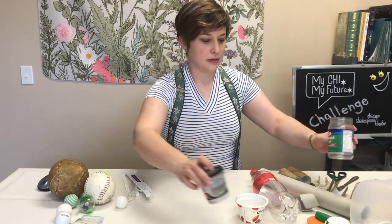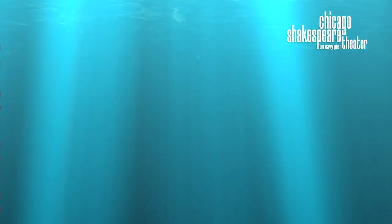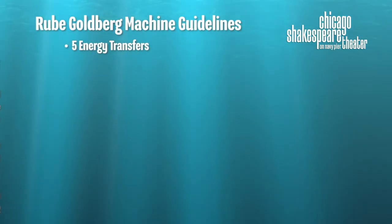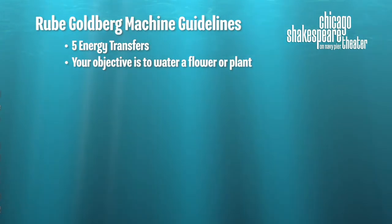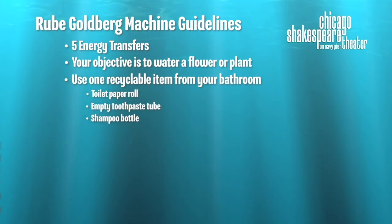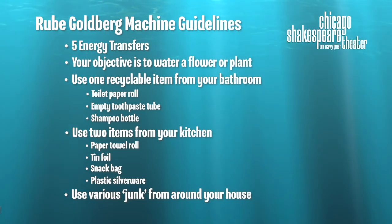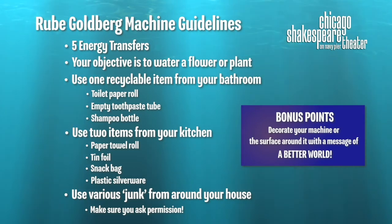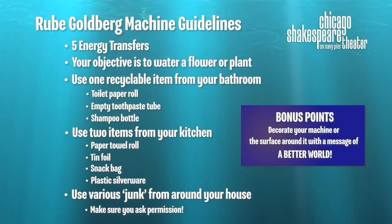Okay, get ready, because here are the rules for the challenge. Chicago Shakes wants to see your Rube Goldberg machine in action if possible. Your machine must have at least five energy transfers, and the final act of your machine or objective is to water a flower or plant. You must use one recyclable item that you would find in your bathroom, two recyclable things you might find in a kitchen, and junk from around your house. Before you take even one piece of garbage from your sister's trash can or the dusty old what's-it in the back of the cupboard, please ask permission first — super important. Bonus points will be awarded to those who decorate their machine or the areas around their machine with newspaper and magazine clippings of a message of a better world.